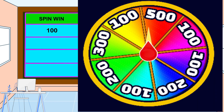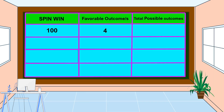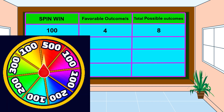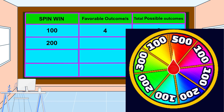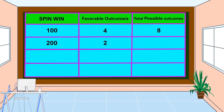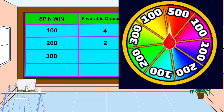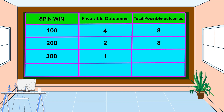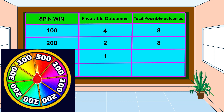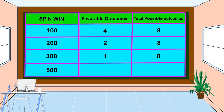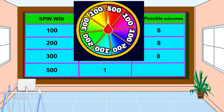Since there are 4 hundreds in the Spin Wind wheel, the answer for favorable outcomes is 4. The answer for total possible outcomes is 8. There are 2 two-hundreds in the Spin Wind; therefore, the answer for favorable outcomes is 2, and for total possible outcomes, the answer is 8. For three-hundred, there is only 1 in the Spin Wind, so the favorable outcome is 1 and total possible outcomes is 8. Likewise with five-hundred, there is 1 favorable outcome and 8 possible outcomes.